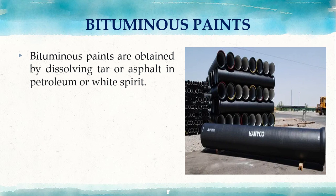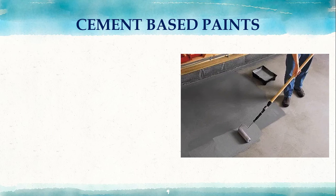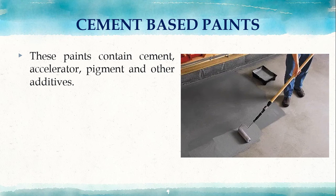Next are bituminous paints. Bituminous paints are obtained by dissolving tar or asphalt in petroleum or white spirit. They provide a black appearance to the surface. Bituminous paints are used for metal structures in underwater conditions and iron pipes carrying water. They have good alkali-resistant properties.